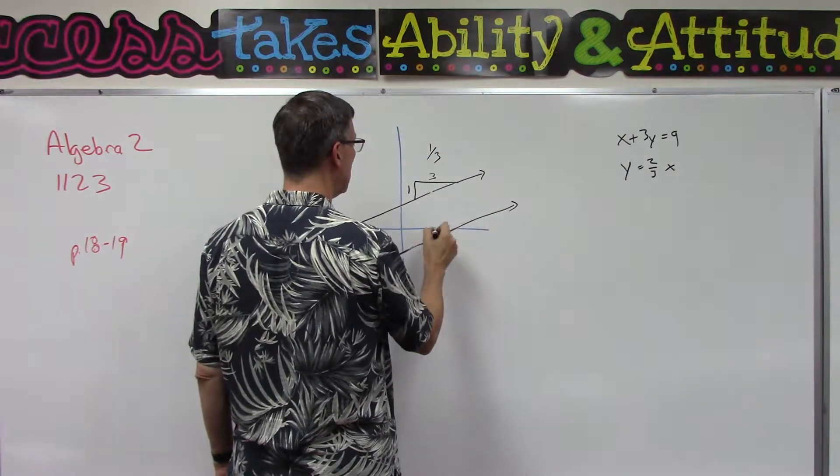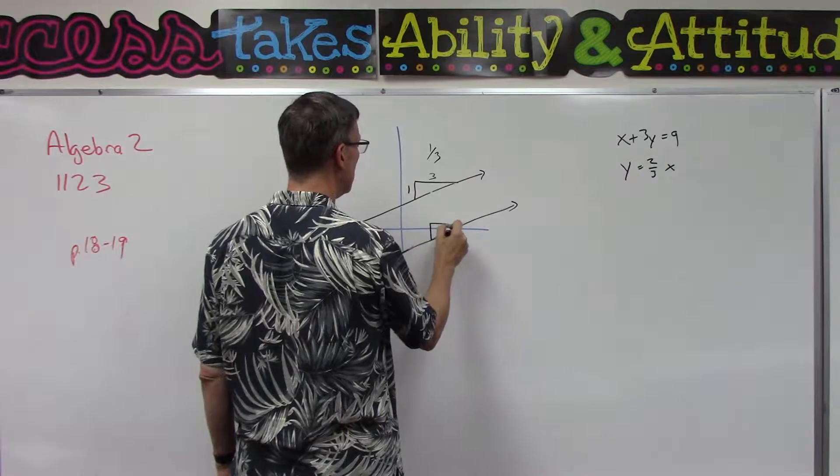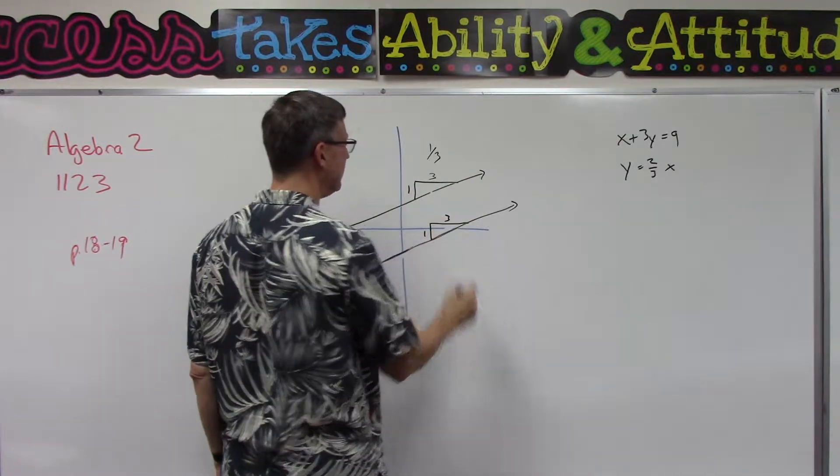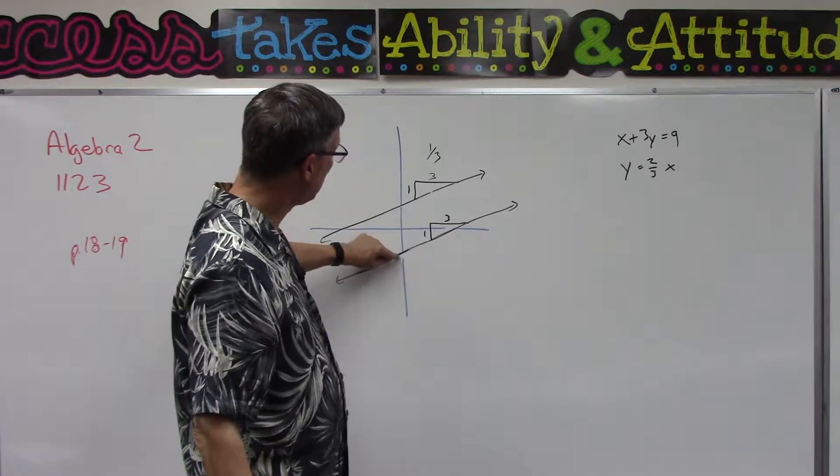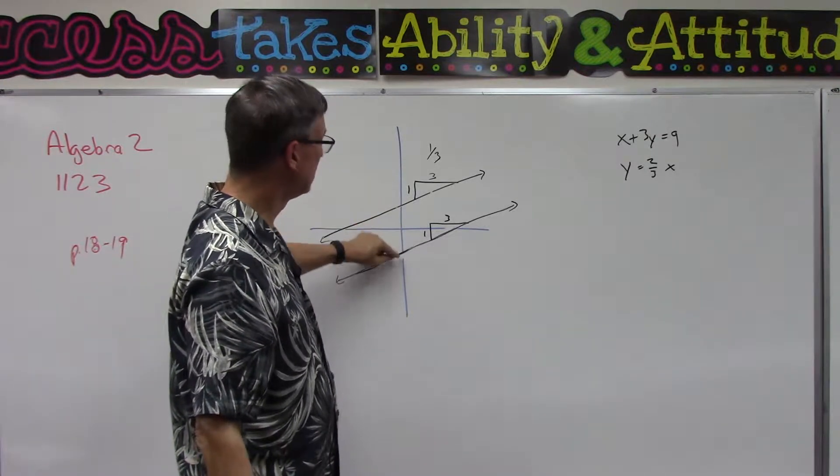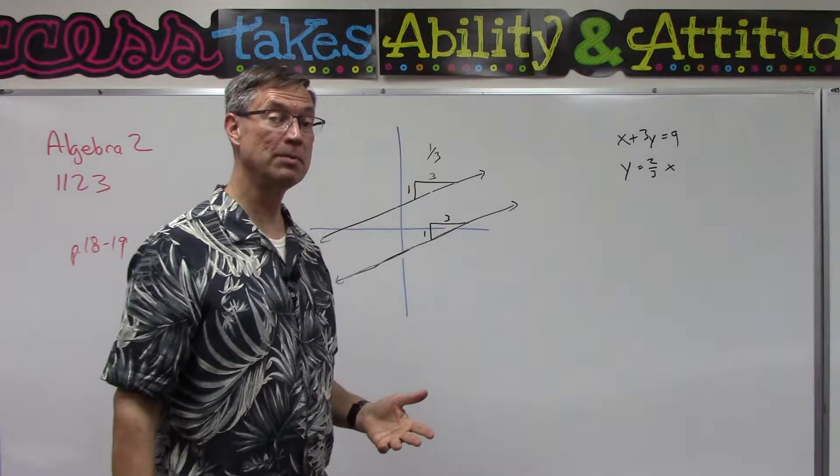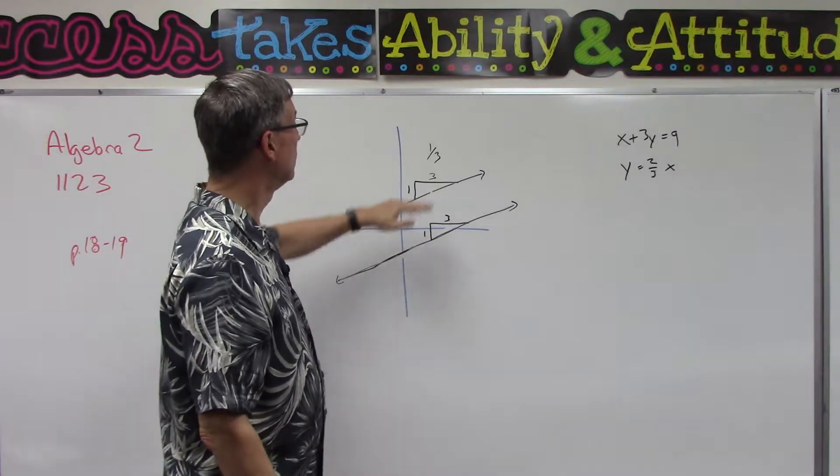Guess what, on this line here the rise over run is going to be the same thing, 1 over 3. The thing that'll be different is the y-intercept. This crosses here, this crosses here, so the y-intercept is different but the slopes will be the same if they're parallel.